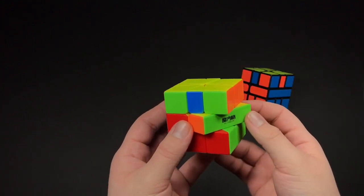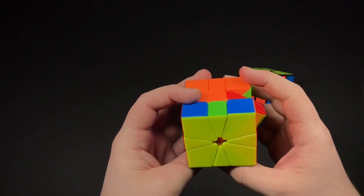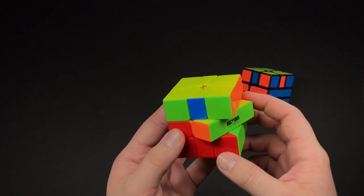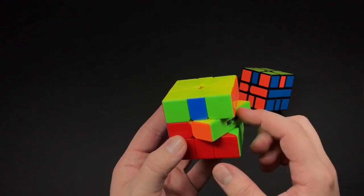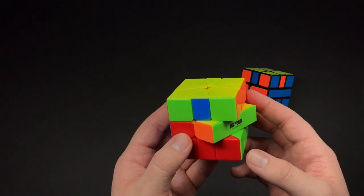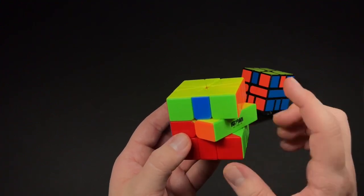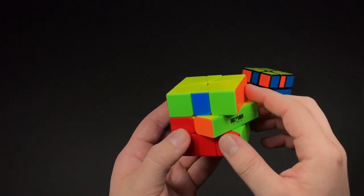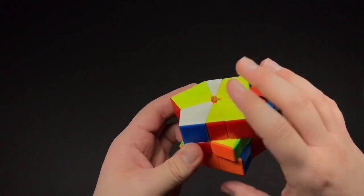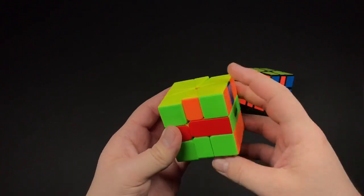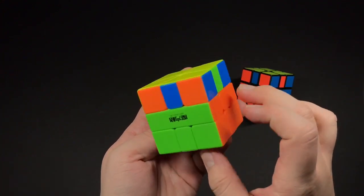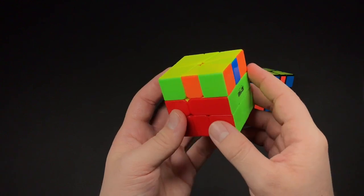Okay, so another case you might get is the opposite parity case. There is an algorithm for this, but I haven't personally memorized it. So what I do is I hold it here and I do the regular parity case that I just showed you. And what that gets me is a U-perm.